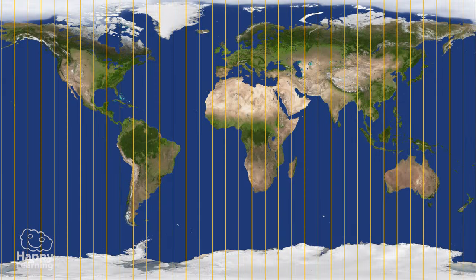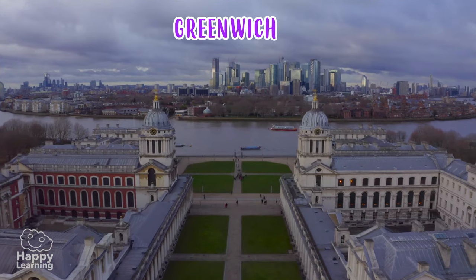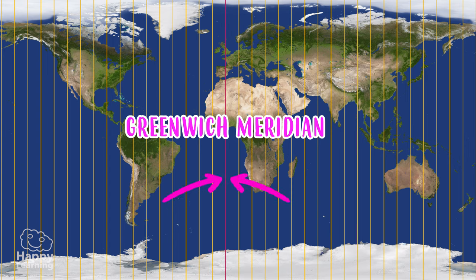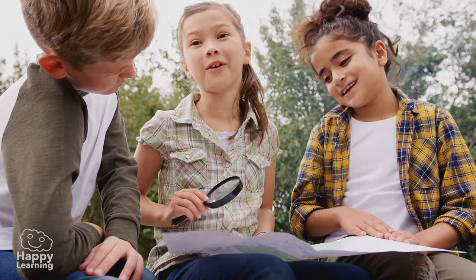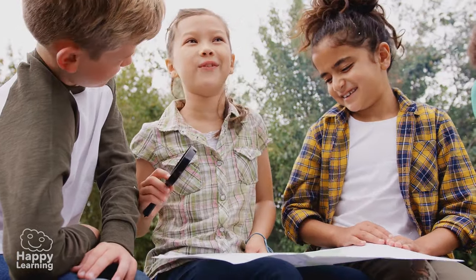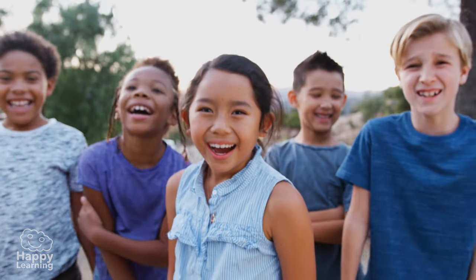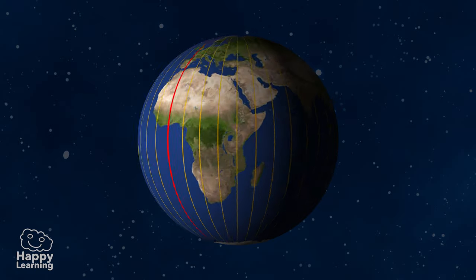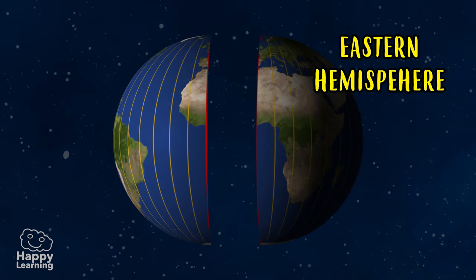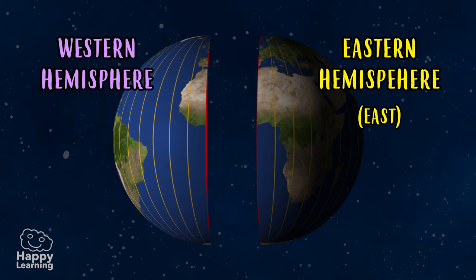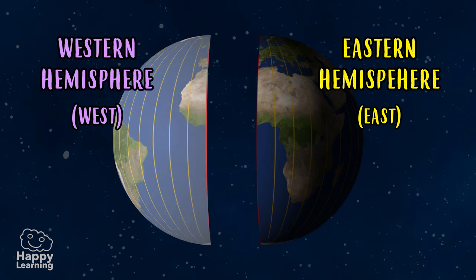The most important meridian is one that passes through a place in England called Greenwich. And do you know what it's called? Well, it's very easy — it's called the Greenwich Meridian. You have to admit, the scientists didn't use much imagination there, did they? The Greenwich Meridian divides the Earth into the eastern hemisphere, which is in the east, and the western hemisphere, which is to the west.